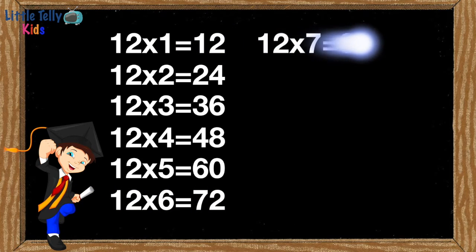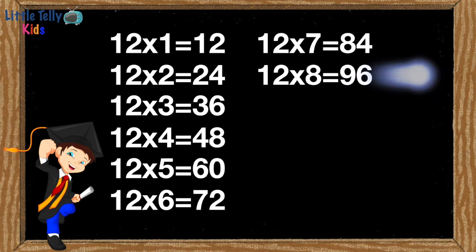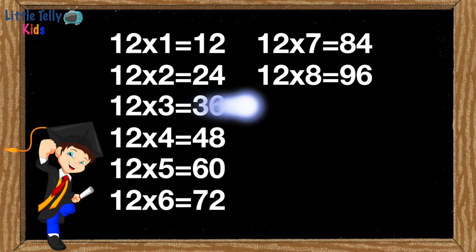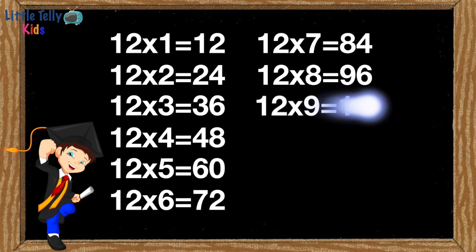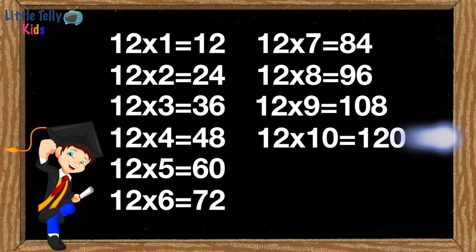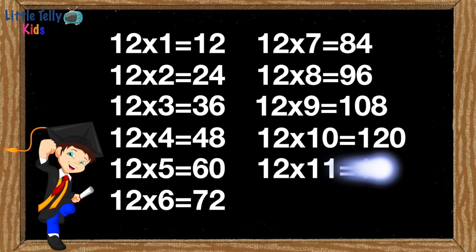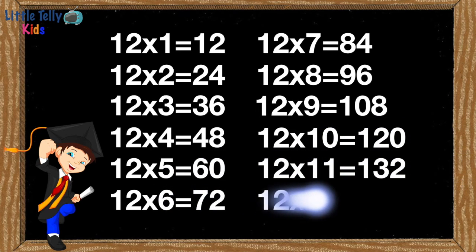12 sevens are 84. 12 eights are 96. 12 nines are 108. 12 tens are 120. 12 elevens are 132.